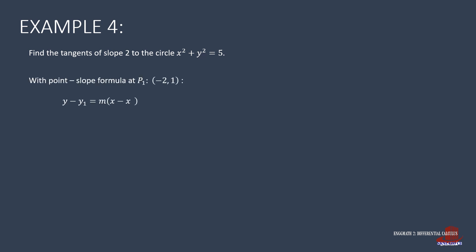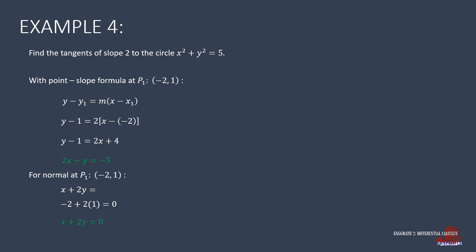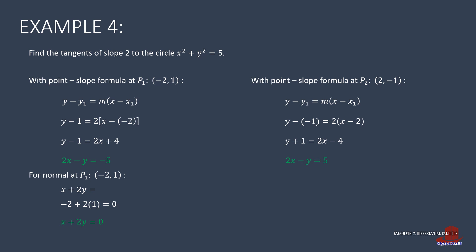For the lines, we use the point-slope formula with point 1 coordinates (-2, 1). We get y - 1 = 2(x + 2), which rearranges as 2x - y = -5. The normal line gives x + 2y = 0. For point 2 with coordinates (2, -1), we get y + 1 = 2(x - 2), which rearranges as 2x - y = 5. The corresponding normal line is x + 2y = 0 — the same normal line for both tangent lines.